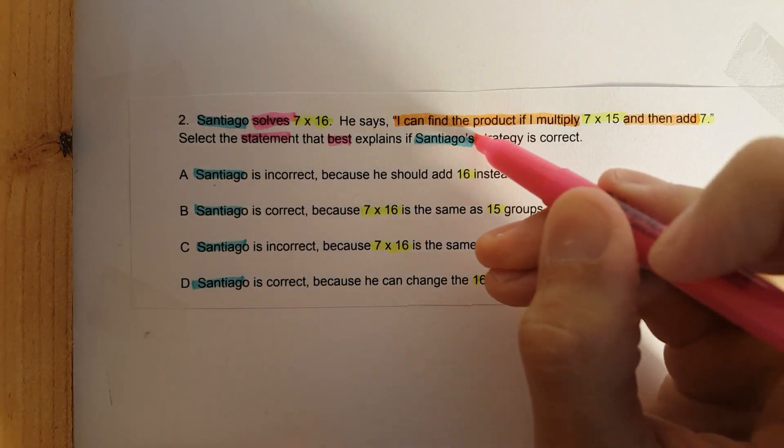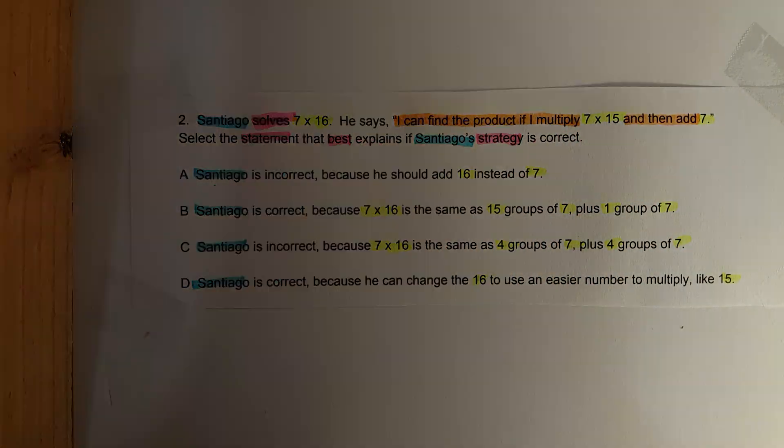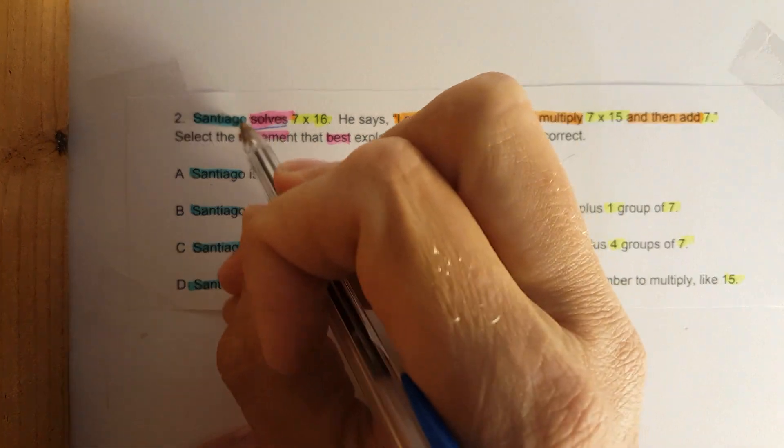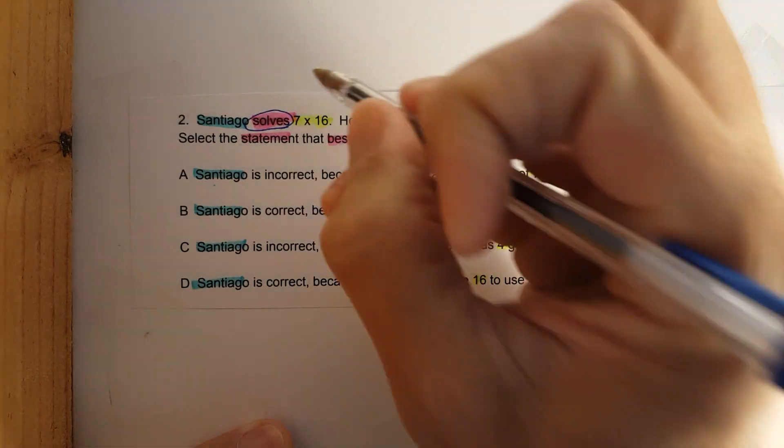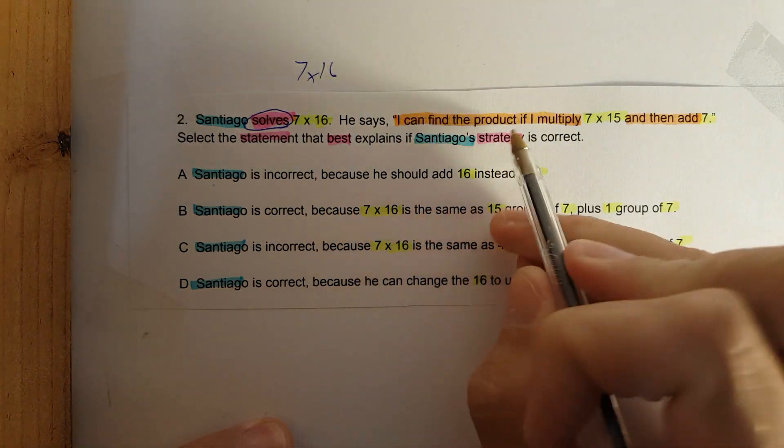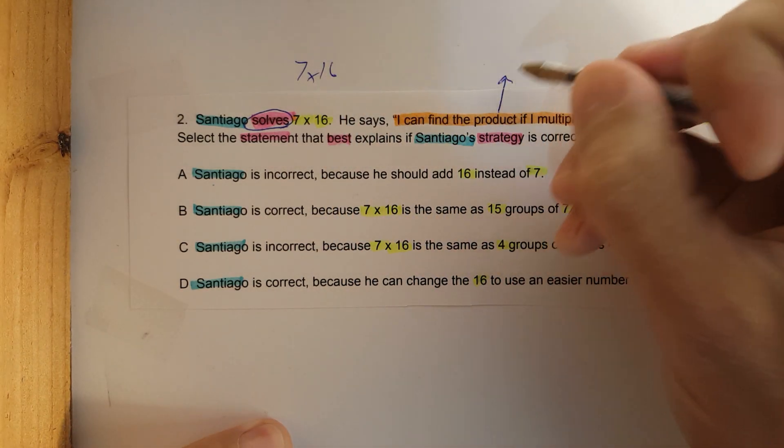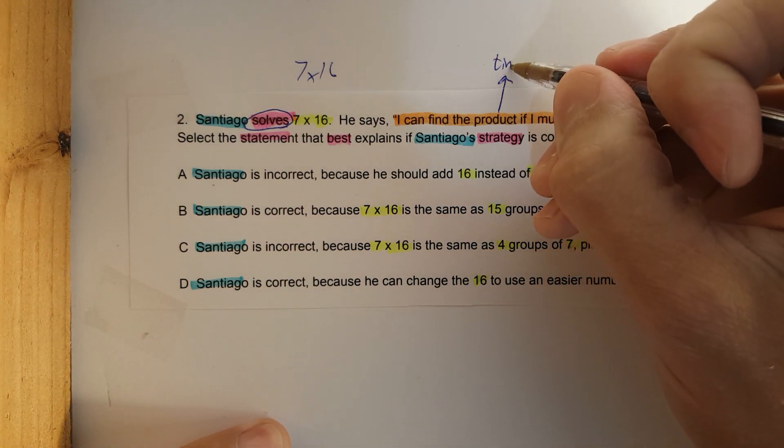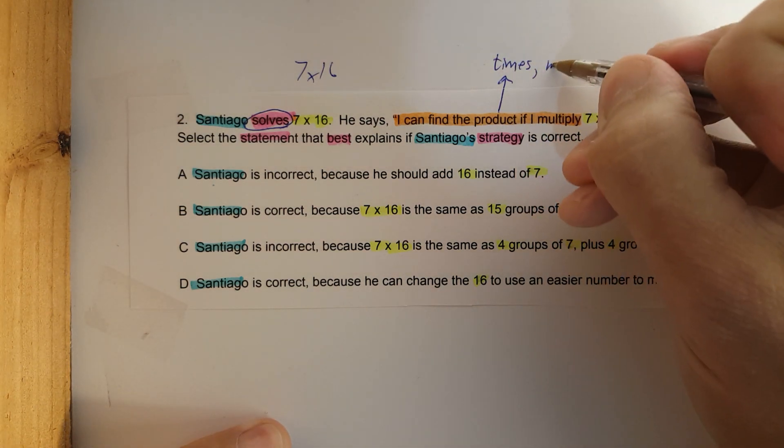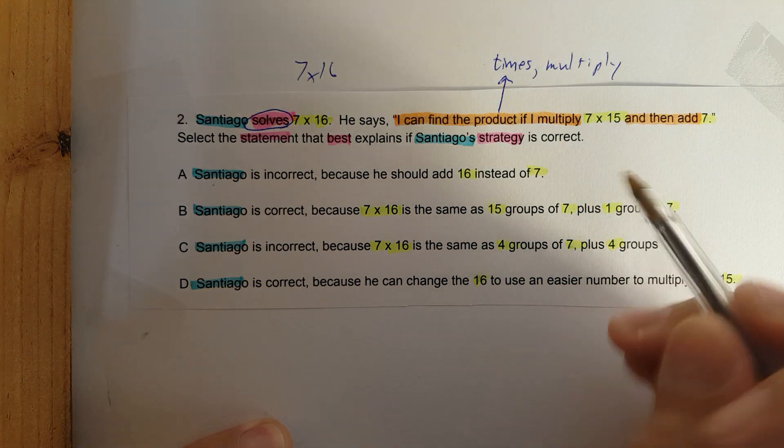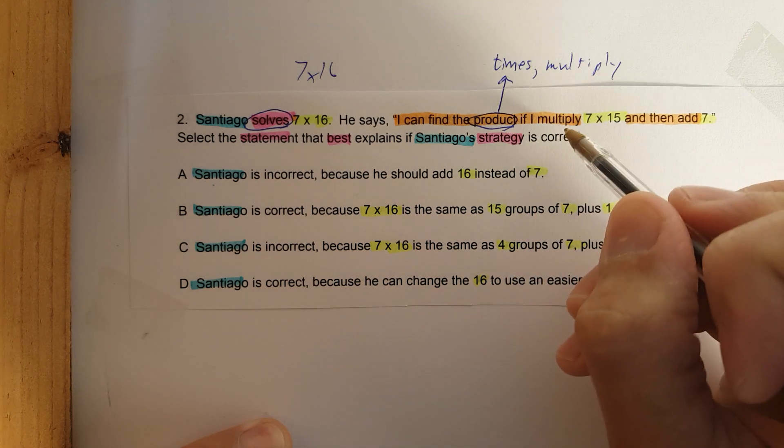And we could even write those words out. So Santiago solves 7 times 16, so I'm gonna write it above. He says, I can find the product - another word for my product is to times, multiply.